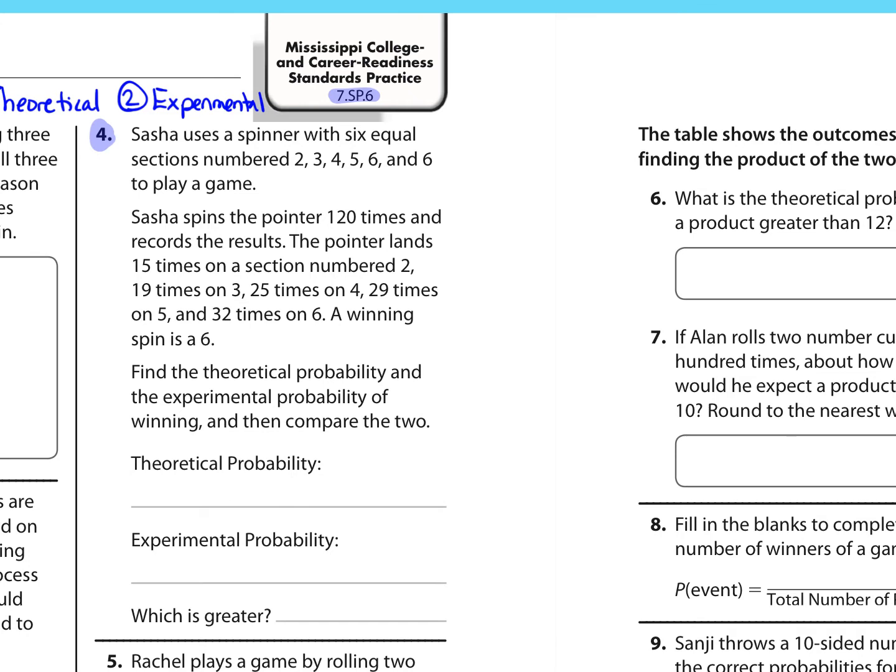So if they're all equal sections, let's start with the theoretical probability. A winning spin is a 6, and so we have two choices that are 6 out of 6 equal sections. And so that would be 0.3 repeating, which is about 33%. So about 33% would be your theoretical probability, what you would expect in theory.